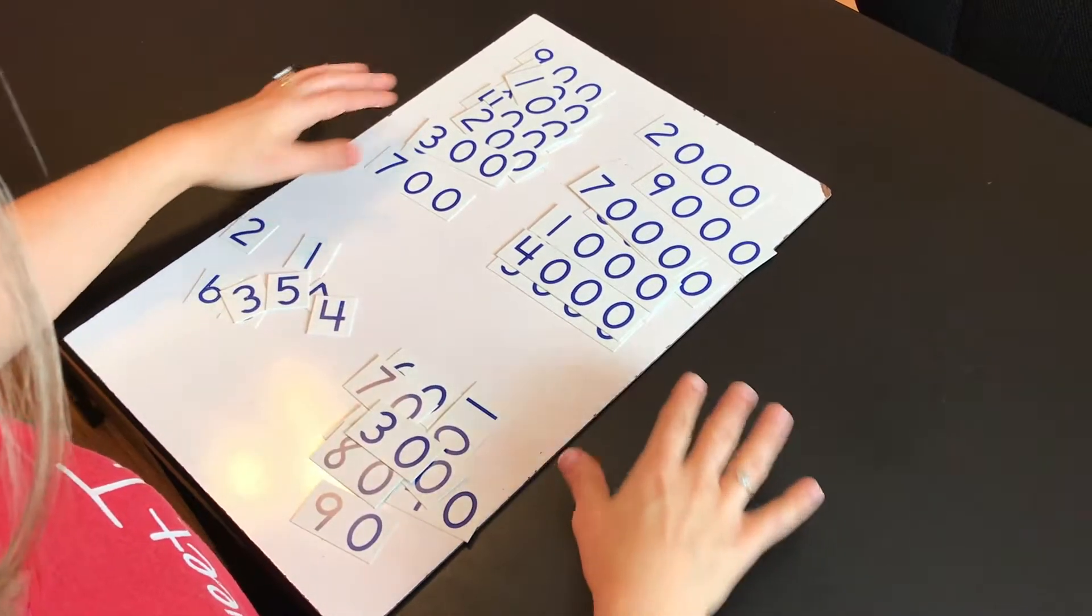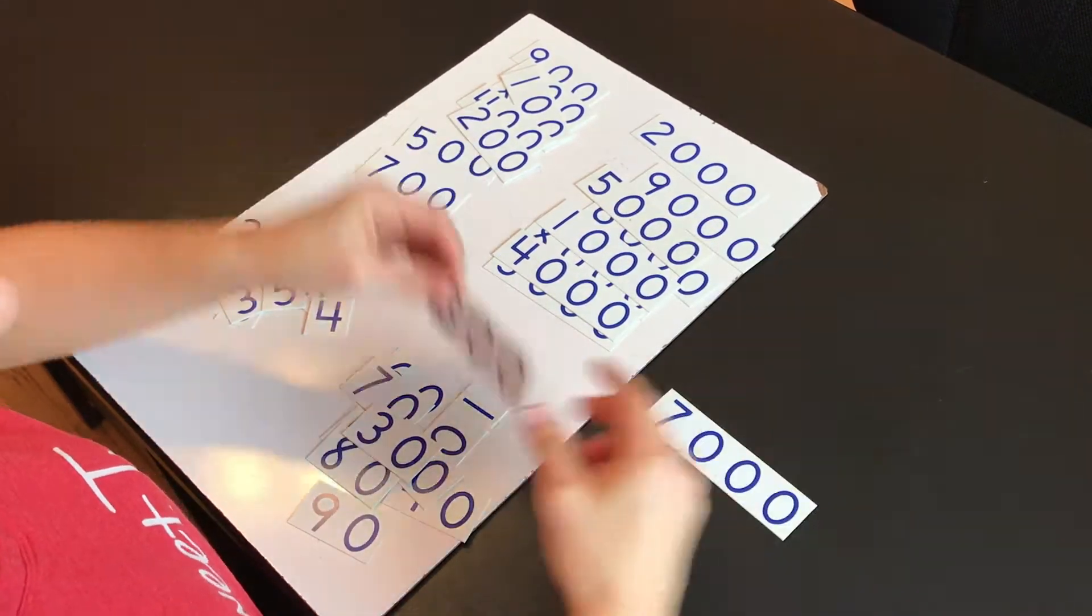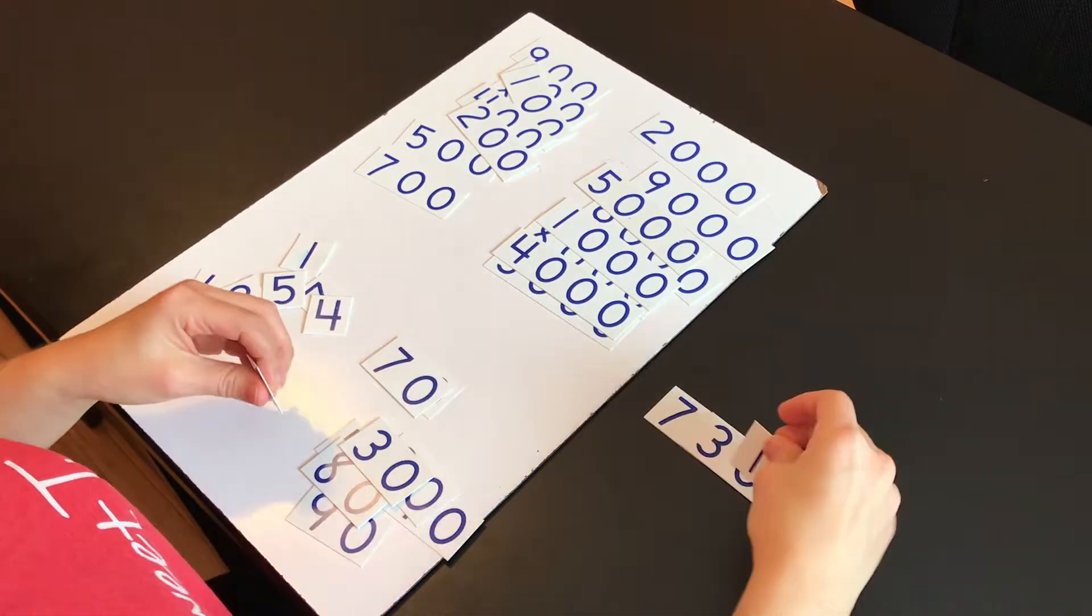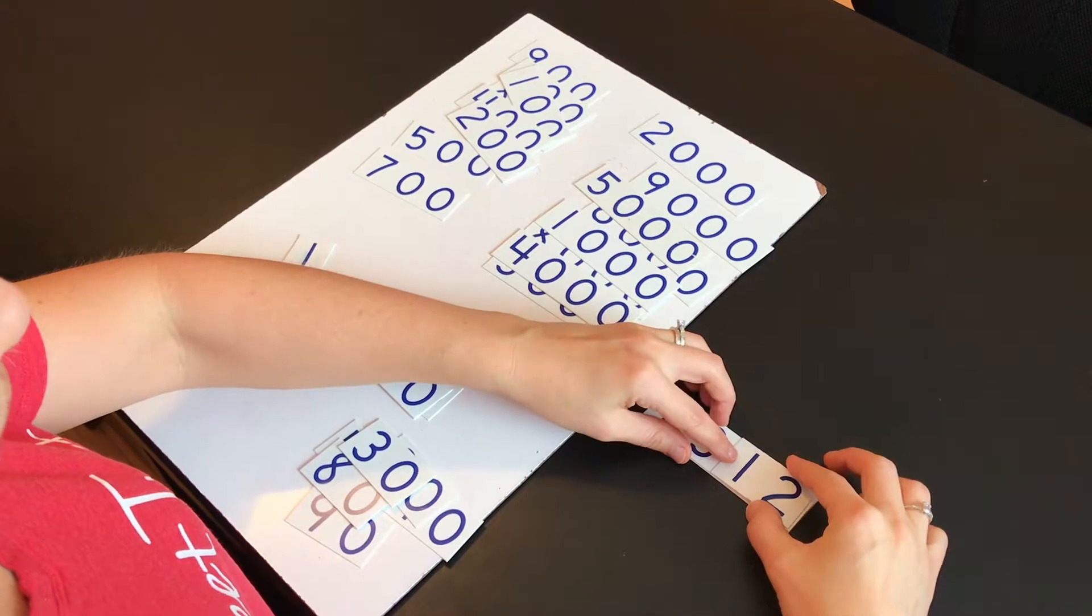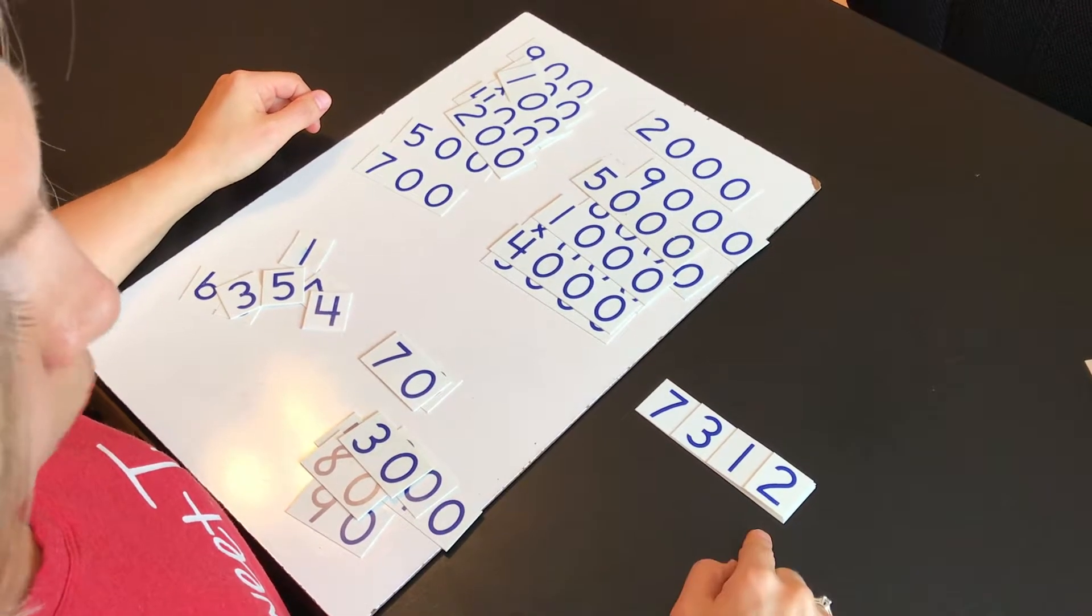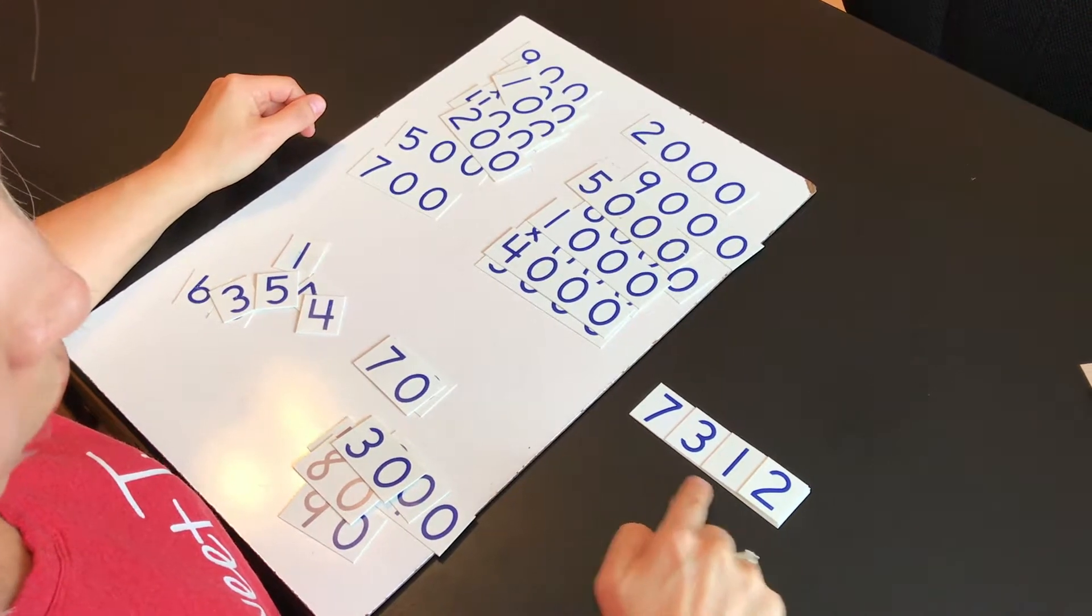So these place value cards are great. You can even make the numbers through the thousands for them to build on top of each other for them to be able to read the number 7312.